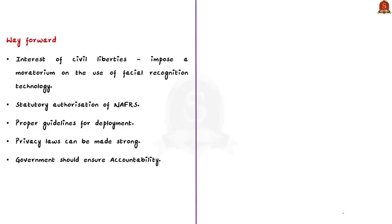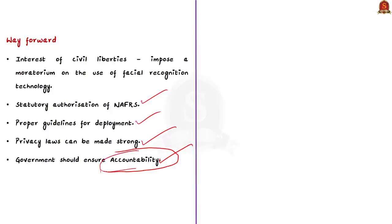The way forward: First, the author suggests putting a moratorium on the use of facial recognition technology. Only after enacting a strong and meaningful data protection law should such a system be implemented. Second, statutory backing should be given to NAFRS — only after legal backing should it be deployed, and there should be proper guidelines for its deployment. Third, privacy laws should be strengthened, which will establish checks and balances and lead to greater government accountability.